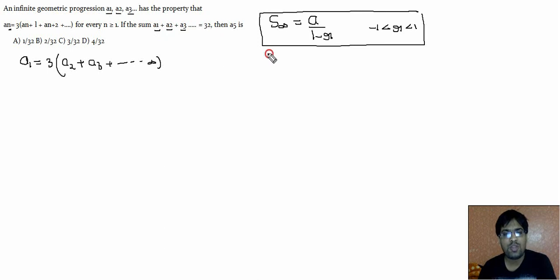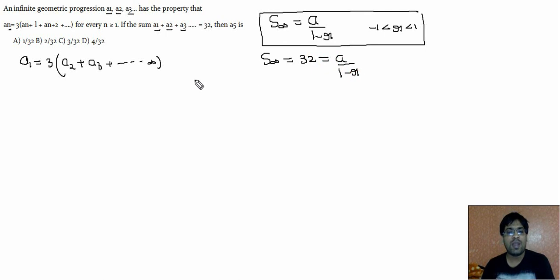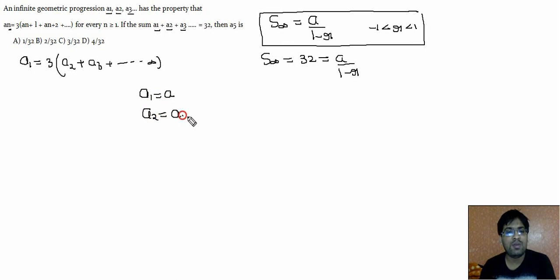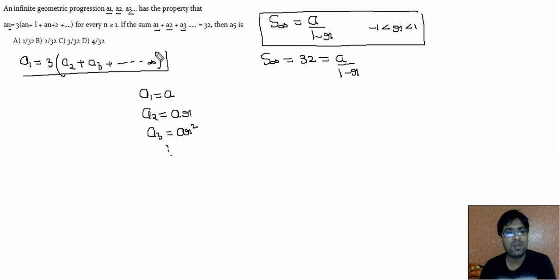The sum to infinity is given as 32, so S_infinity equals a divided by (1 minus r) equals 32. Let a1 equal to a — the first term is a, the second term is ar, the third term is ar², and so on. The relation connects a1 with a2, a3, a4, and so forth.